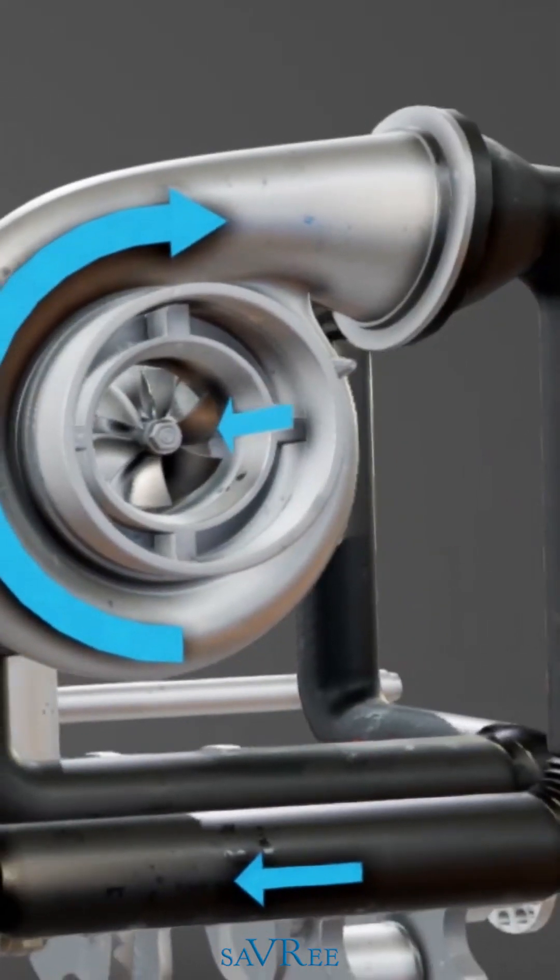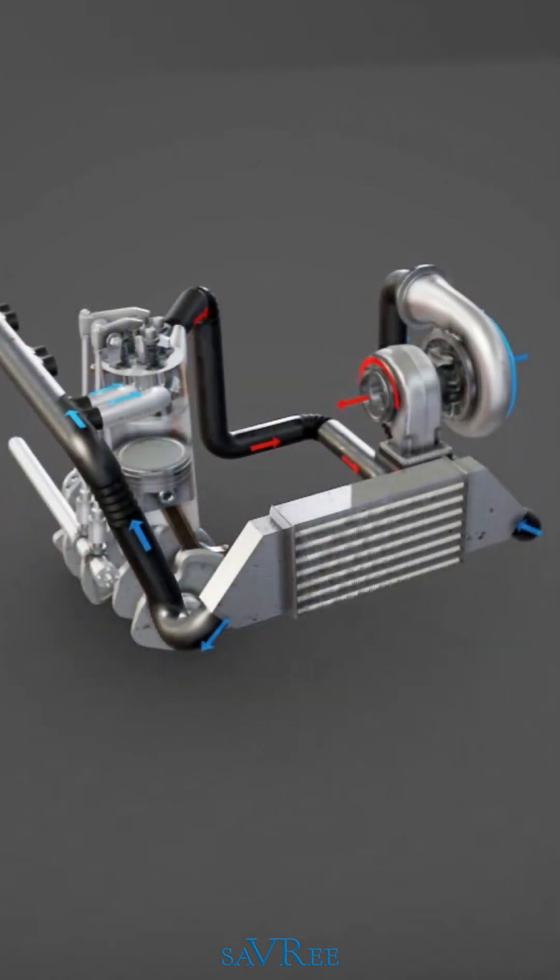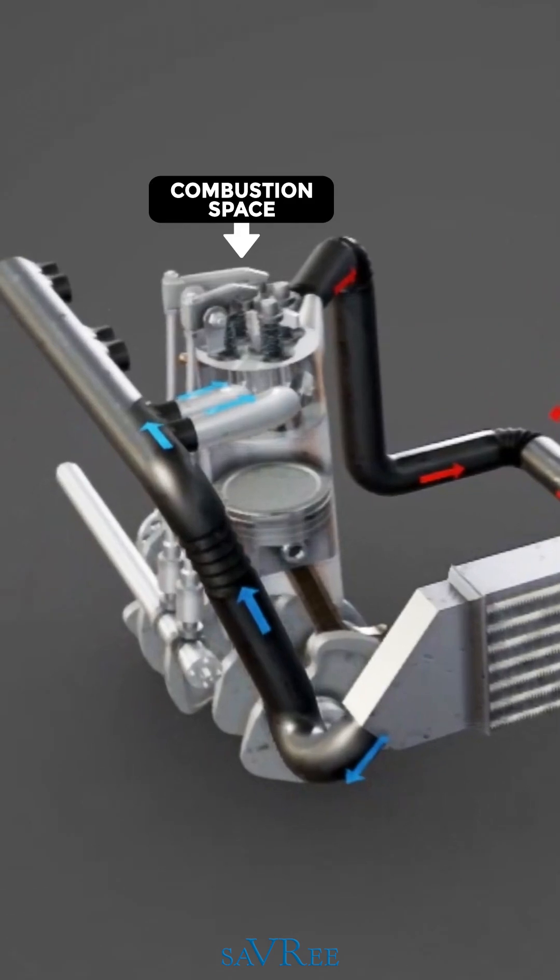The compressor draws air into the engine and compresses it, before discharging the compressed air into the combustion space. The compressed air is then mixed with fuel in the combustion space and ignited.